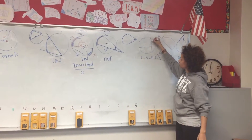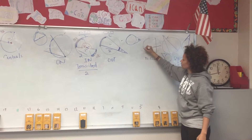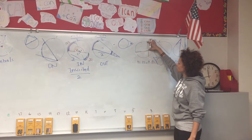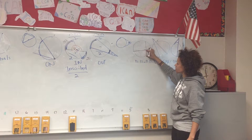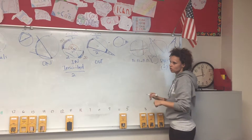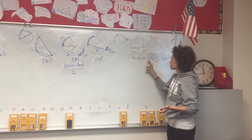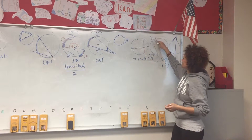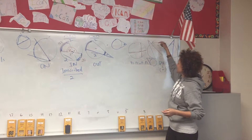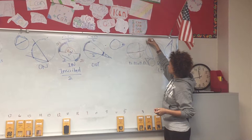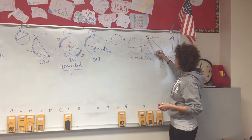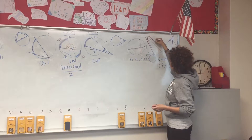Now for segments — moving on from angles to segments. The cross-shaped one means the whole intersection is inside the circle. When it's inside, the rule is: part one times part two equals part one times part two. Just plug in the numbers.